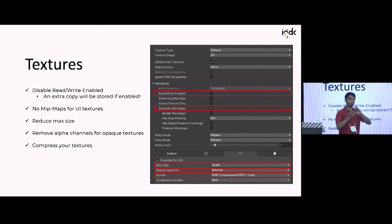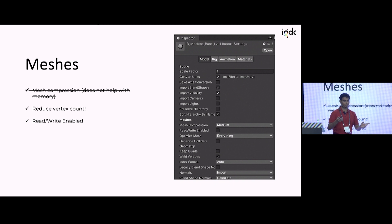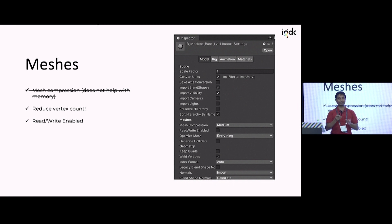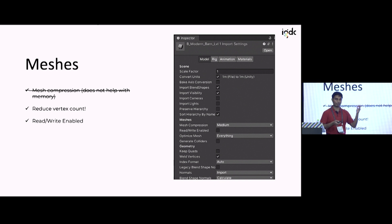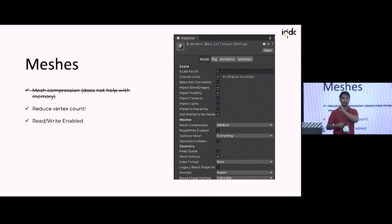For meshes, there's not much you can do. The biggest advice is to sit with your art team and reduce your vertex count — just fight with them until they're happy to live with less detail. Mesh compression does not work for memory; it helps bring down app size but meshes are stored uncompressed in memory. Meshes also have a Read/Write Enabled flag — it's off by default, but the same issue can happen. Keep it off unless you genuinely need to access and modify the mesh from code.